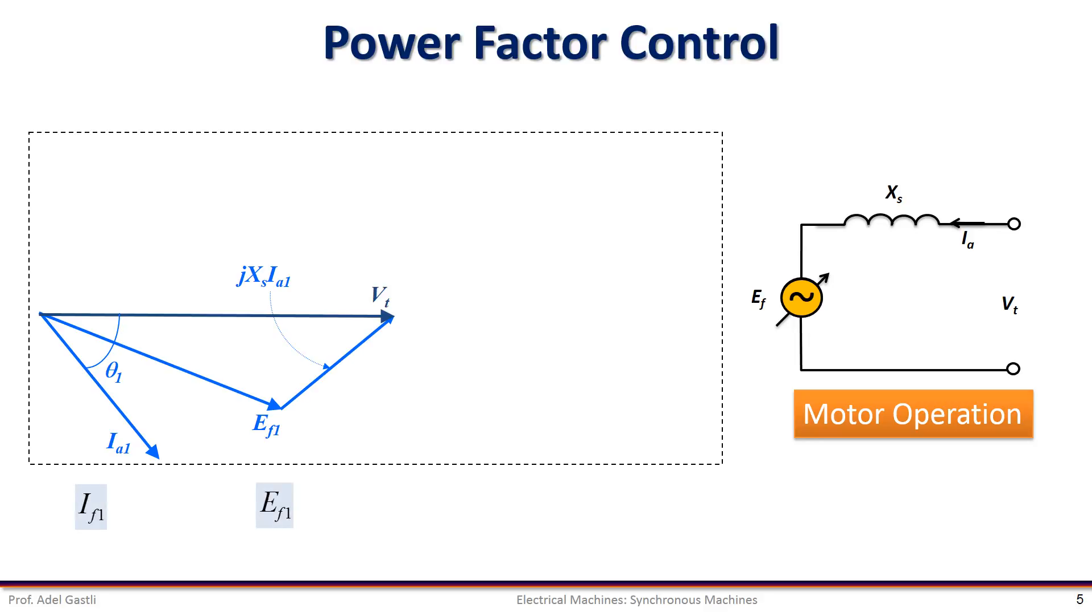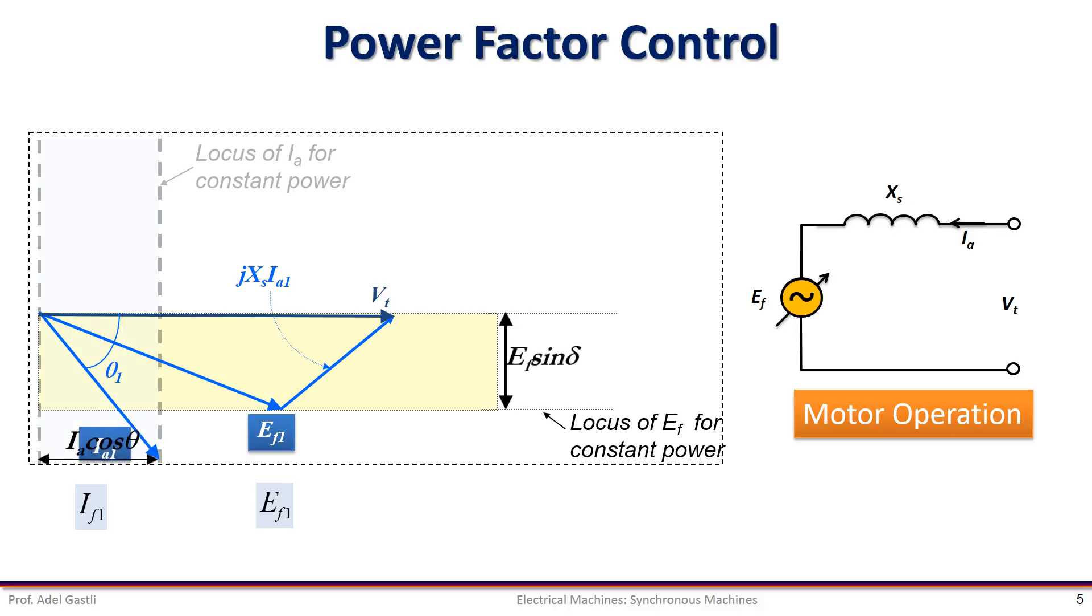The phasor diagram for a given value of the excitation current IF1 leading to an excitation voltage EF1 and an armature current Ia1 is shown here. By controlling the excitation current IF, the locus of the excitation voltage for constant power will be this one, where EF sine delta is constant. And the locus of the armature current for constant power will be this one, where Ia cosine theta is constant.